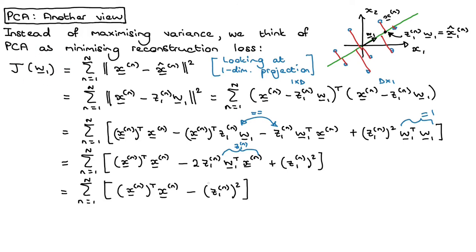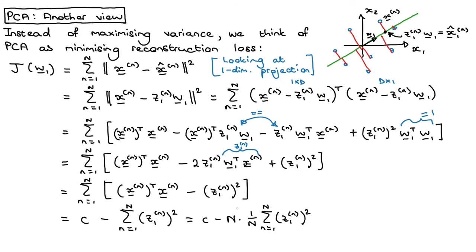The loss with respect to W1 — the first term doesn't contain any W1, so the loss can be written as some constant C minus the sum over n of z1n squared. Writing this as C minus N times one-over-N times the sum of z1n squared — that inner expression is actually just the sample variance when I project onto z1n. So minimizing the reconstruction loss is exactly the same as maximizing the variance in the projected space.